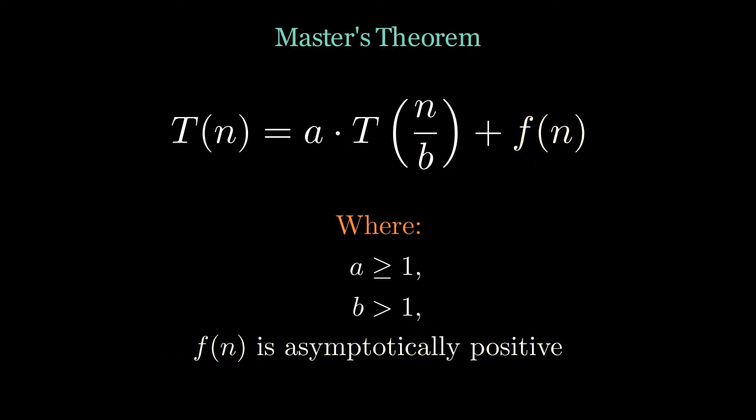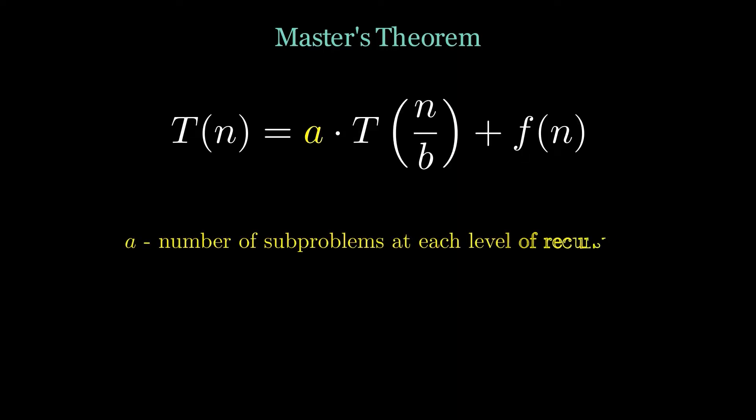Let's dive deeper on why these conditions are there and what actually are a and b. a represents the number of subproblems at each level of recursion. b is the factor by which the size of the problem is reduced in each recursive call.